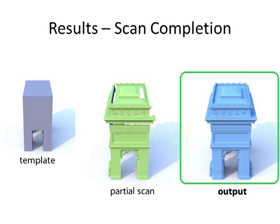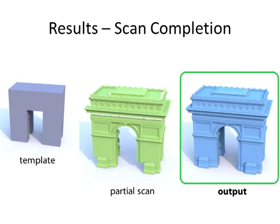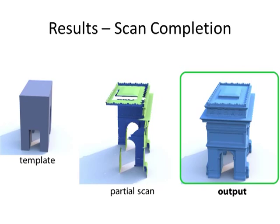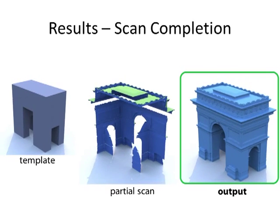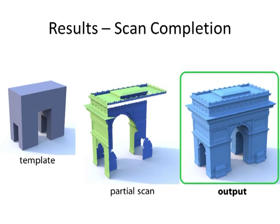Finally, this is an example where the input is a single view scan of the Arc de Triomphe. The regions occluded from the viewpoint are completely missing. Our algorithm is able to propagate scan details across the entire reconstructed surface, leveraging the self-analogies of a structurally similar template shape.